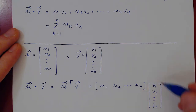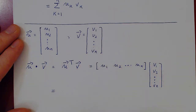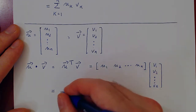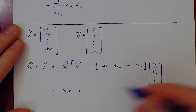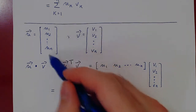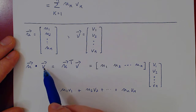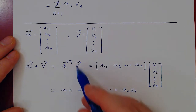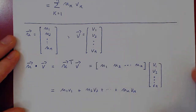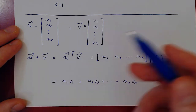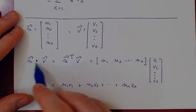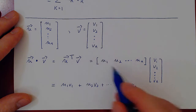When you do a row times a column, you get a single real number. How do we multiply a row times a column matrix? We multiply corresponding entries and add them up: u1 v1 plus u2 v2, up to un vn. So if you think of the vectors as column vectors, dotting u and v is the same as the transpose of u times vector v. You can view the dot product as simple matrix multiplication between a row matrix and a column matrix. It is worth noting you would get the same result if you did v transpose times u.